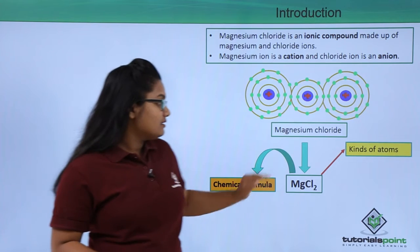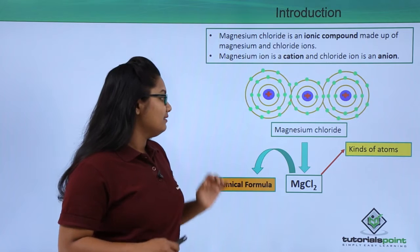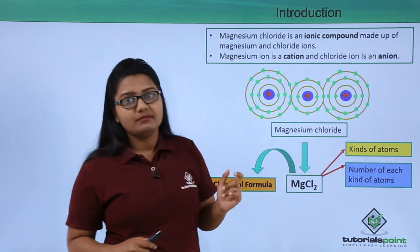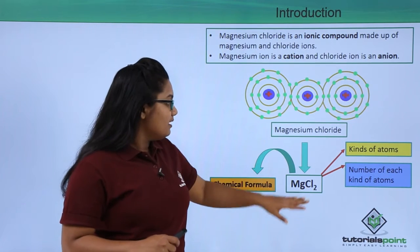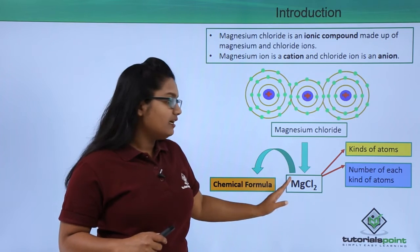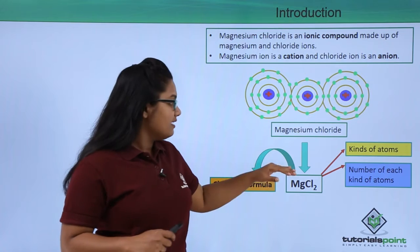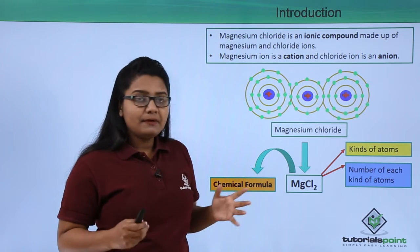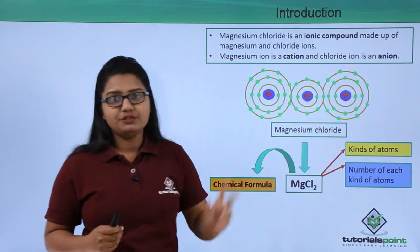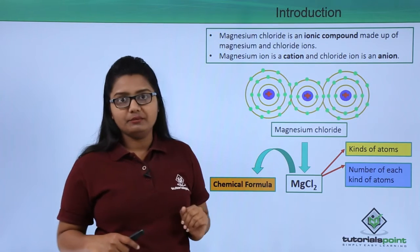The chemical formula gives us two pieces of information: first, the kinds of atoms present in the compound, and second, the number of each kind of atom. For instance, MgCl₂ tells us there is one magnesium atom and two chlorine atoms in this compound.